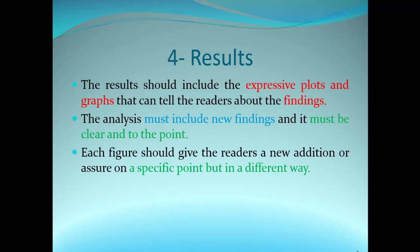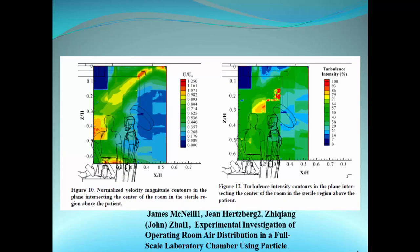Each figure should give readers a new addition or affirm a specific point in a different way. For example, you can measure velocity and divide it by a reference velocity and then present your analysis. You can also measure another quantity like turbulence intensity, which leads to another point of view or confirms the previous one.